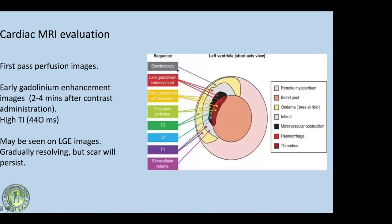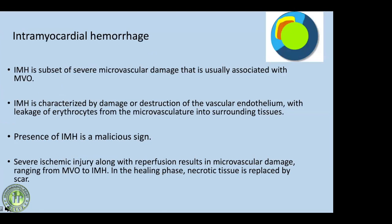Cardiac MRI with multiple sequences — late gadolinium enhancement, early gadolinium enhancement for MVO, perfusion scan, parametric mapping — allows calculation of area at risk, amount of infarction, microvascular obstruction, hemorrhage, and thrombus. This is the value of cardiac MRI in acute coronary syndrome. Intramyocardial hemorrhage is a subset of severe microvascular damage.